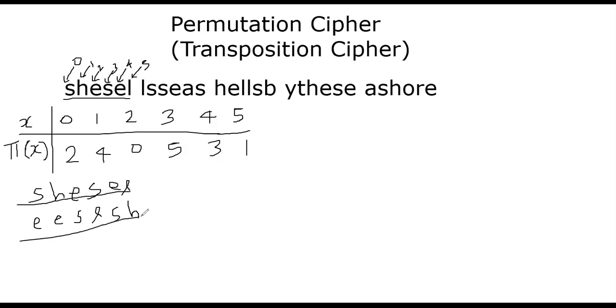So if this is the input, this will be the output ciphertext. The decryption is now easy—you need to know this mapping, right, and you go backwards.